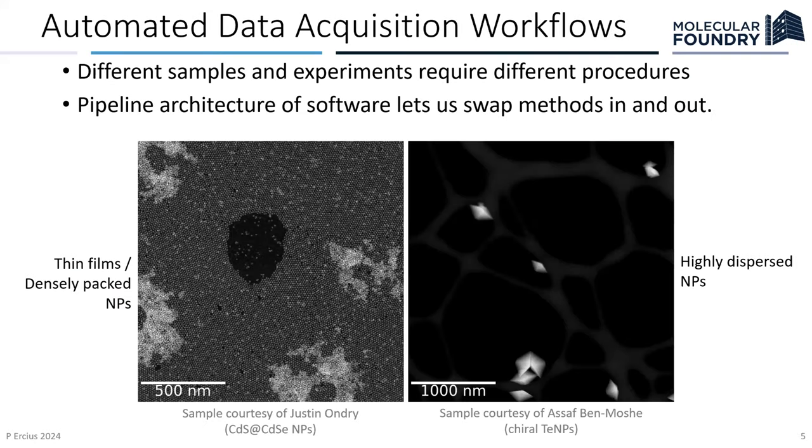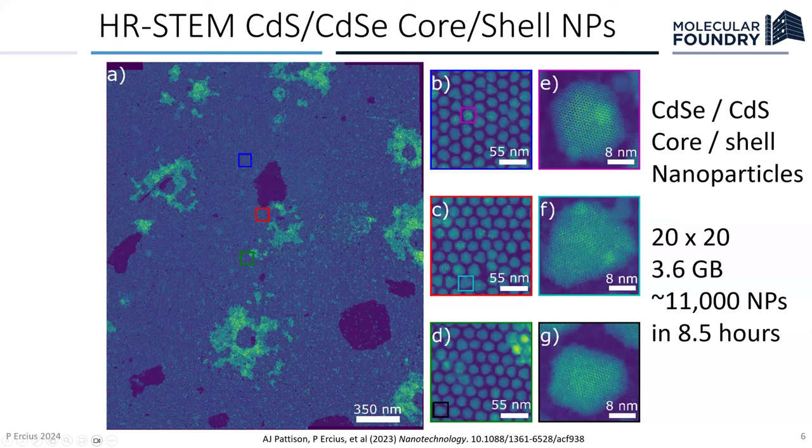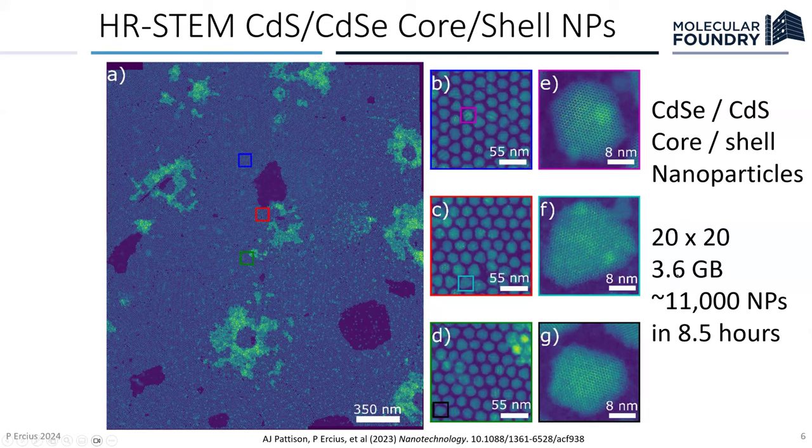So one thing I'm going to talk about then is automated data acquisition flows. We're really looking forward to NERSC 10 and how we can kind of use this kind of stuff. But one of the things that we do is we want to take lots of images of lots of particles. Or you want to take lots of images of very single particles that are all over the place. I'm mostly going to be talking about the left, but the right is where the new IRI NERSC 10, I think, will really help us a lot. So here's an actual data set that we acquired using the system where we took, it's only 20 by 20 images. But that was 3.6 gigabytes, and 11,000 nanoparticles in about eight and a half hours with no human in the loop.